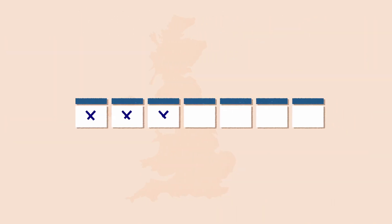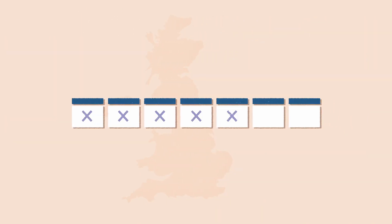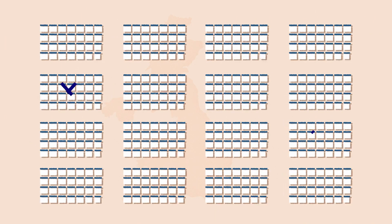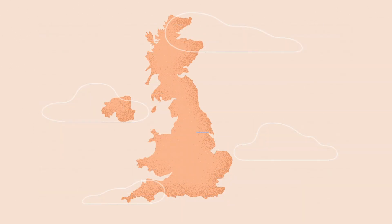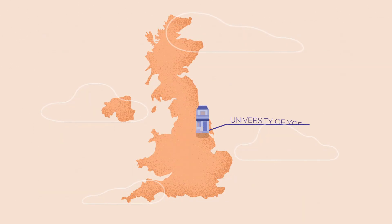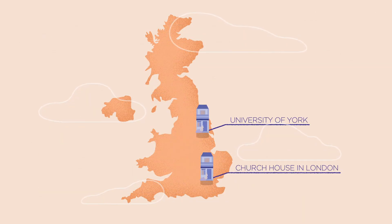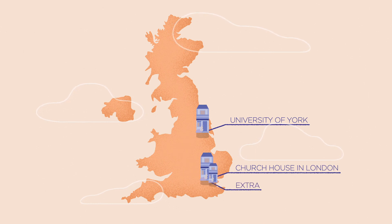General Synod meets for three to five days, usually twice a year — once as a residential at the University of York, and once at Church House in London. Sometimes there's an extra meeting in London.